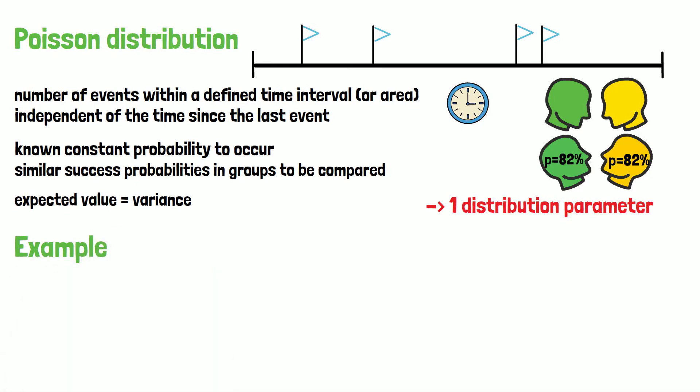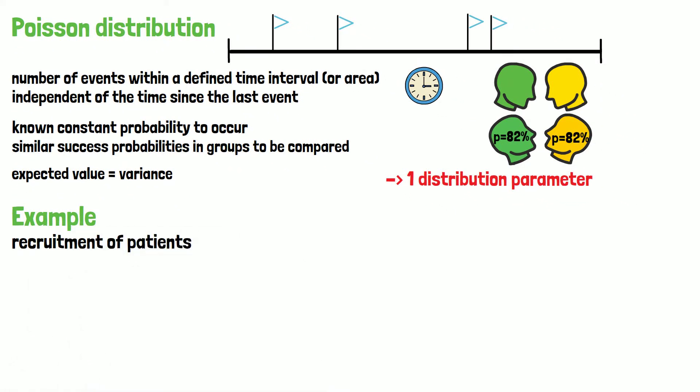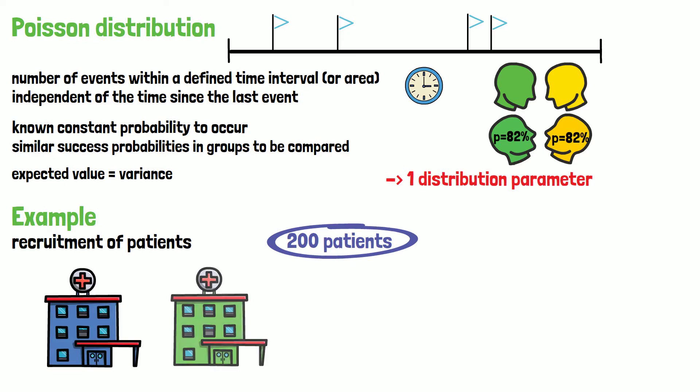The primary example of the use of the Poisson distribution in clinical trials is to model the recruitment of patients in the planning phase of a study. Let's assume 200 patients have to be recruited in a multi-center trial from five sites.